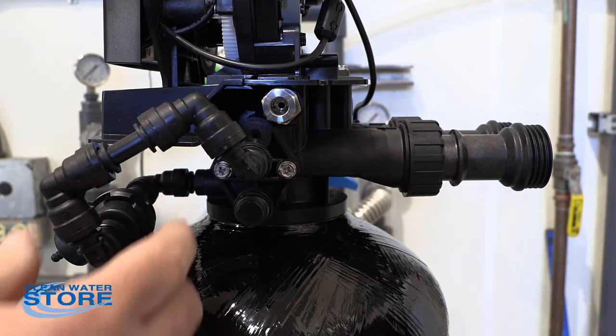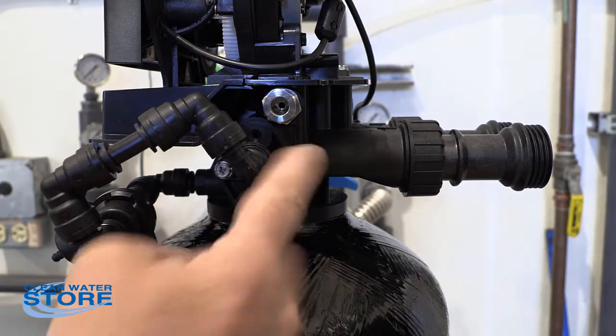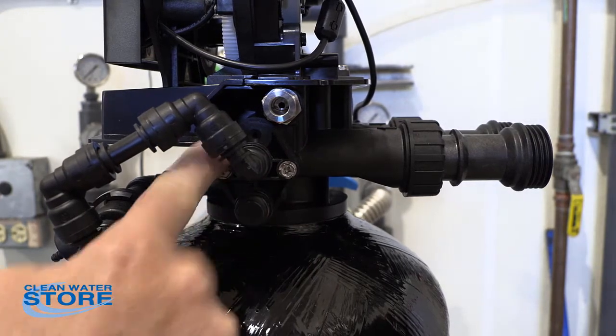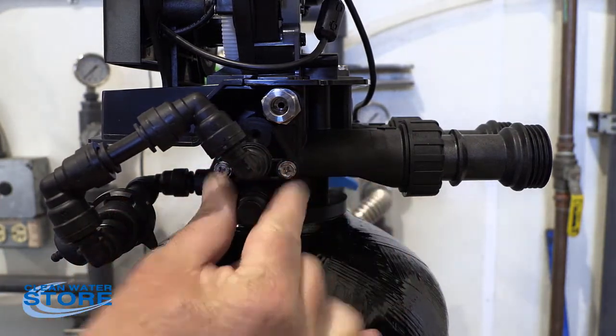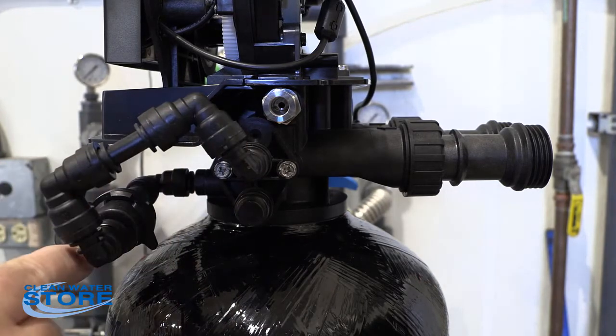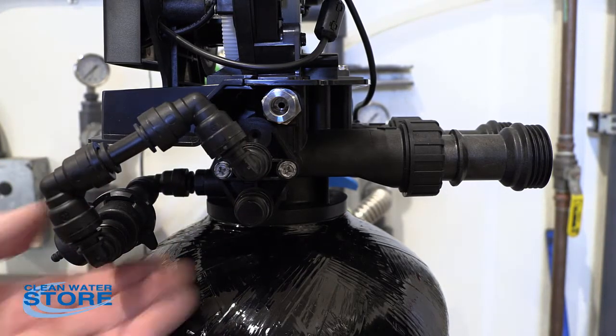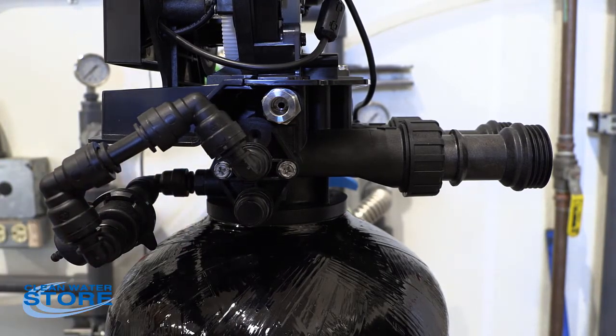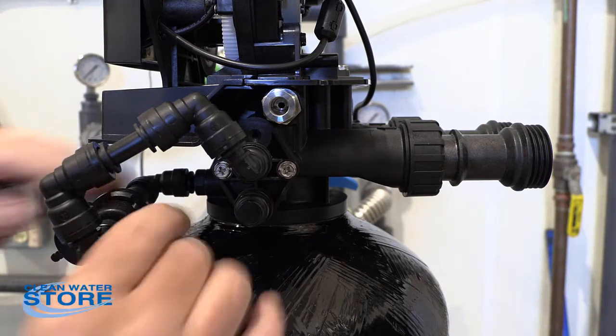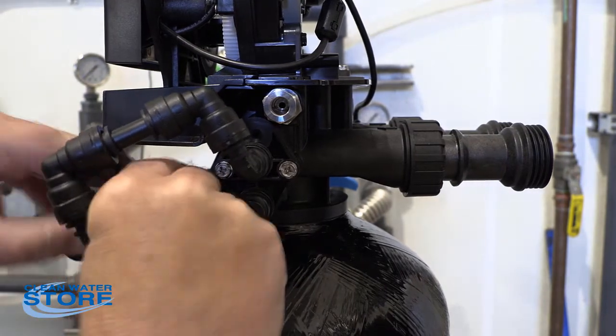The first thing we need to do—this is the injector right here, it's inside here—so we're going to remove these two screws. First thing we need to do is remove the air injector portion. This is a newer version; it has a clip. You just pop the clip off right here.